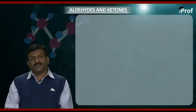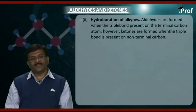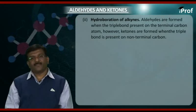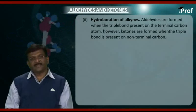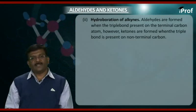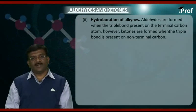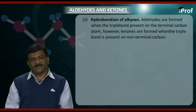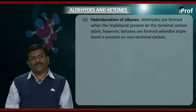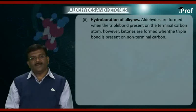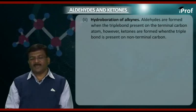The next method is hydroboration of alkynes. Aldehydes are formed when the triple bond is present on the terminal carbon atoms. However, ketones are formed when the triple bond is present on non-terminal carbon atoms.